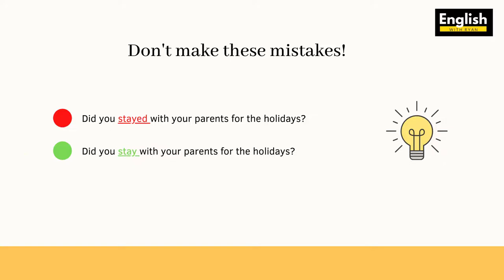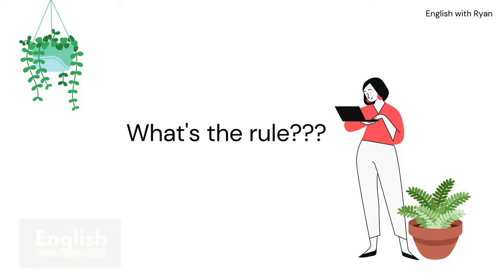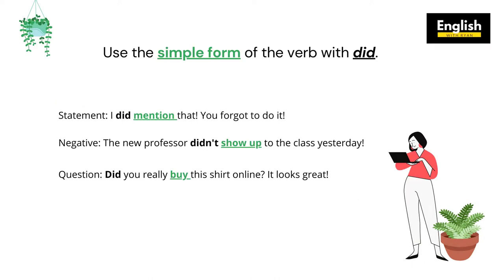Let's take a look at another pair: 'Did you bought a new phone?' You should say: 'Did you buy a new phone?' So what's the rule? Well, the rule is really simple: use the simple form of the verb with 'did.'